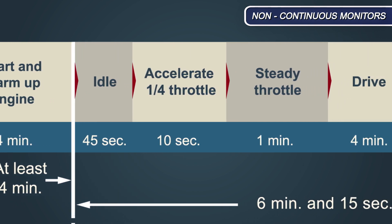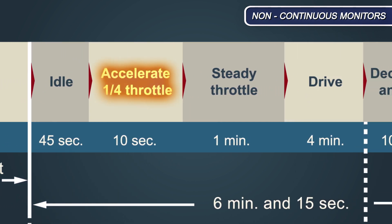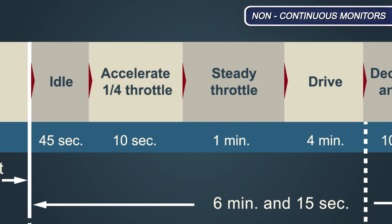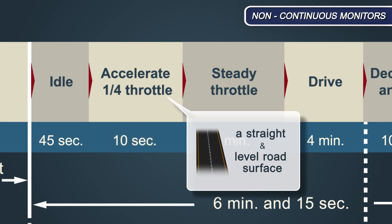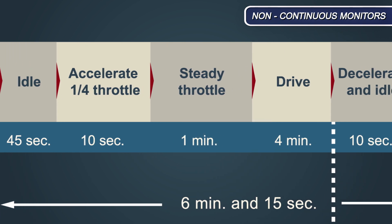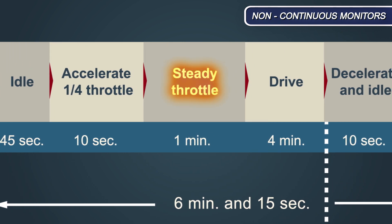The vehicle accelerates to 72 kilometres per hour or 45 miles per hour using a quarter throttle opening. This should be approximately 10 seconds, and is best performed on a straight and level road surface. For the next minute a steady throttle opening should be used to maintain a speed of between 45 and 60 kilometres per hour or 30 to 40 miles per hour.